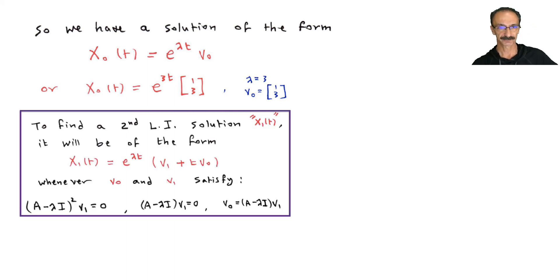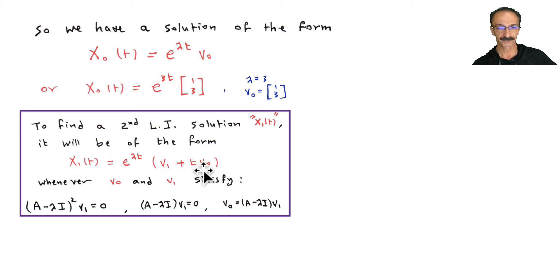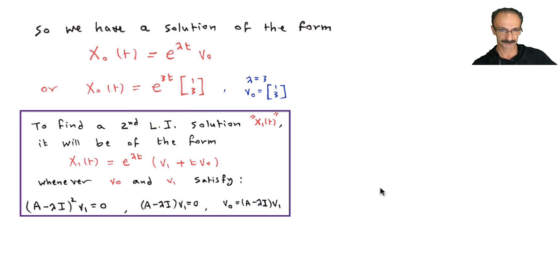Now how do you find the second vector? To find the second linearly independent solution x_sub_1, it will be of the form: x_sub_1 = e^(lambda*t) times (v_sub_1 + t * v_sub_0), where v_sub_0 and v_sub_1 must follow three specific conditions.